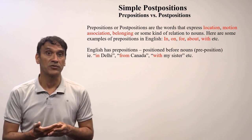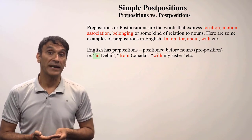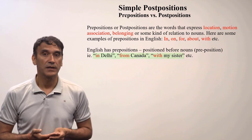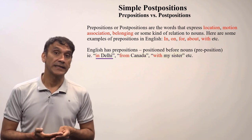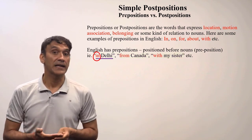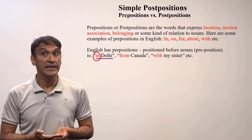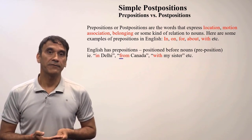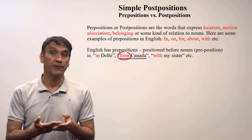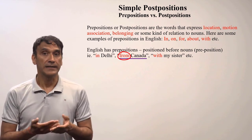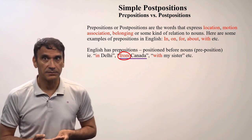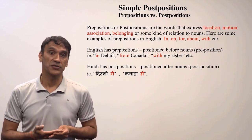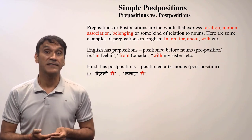English has prepositions, which means they appear before the noun — that's why they're called prepositions. For example: 'in Delhi,' 'from Canada,' 'with my sister.' In the phrase 'in Delhi,' the word 'in' comes before Delhi. In the phrase 'from Canada,' the word 'from' comes before Canada — that's why they are called prepositions.